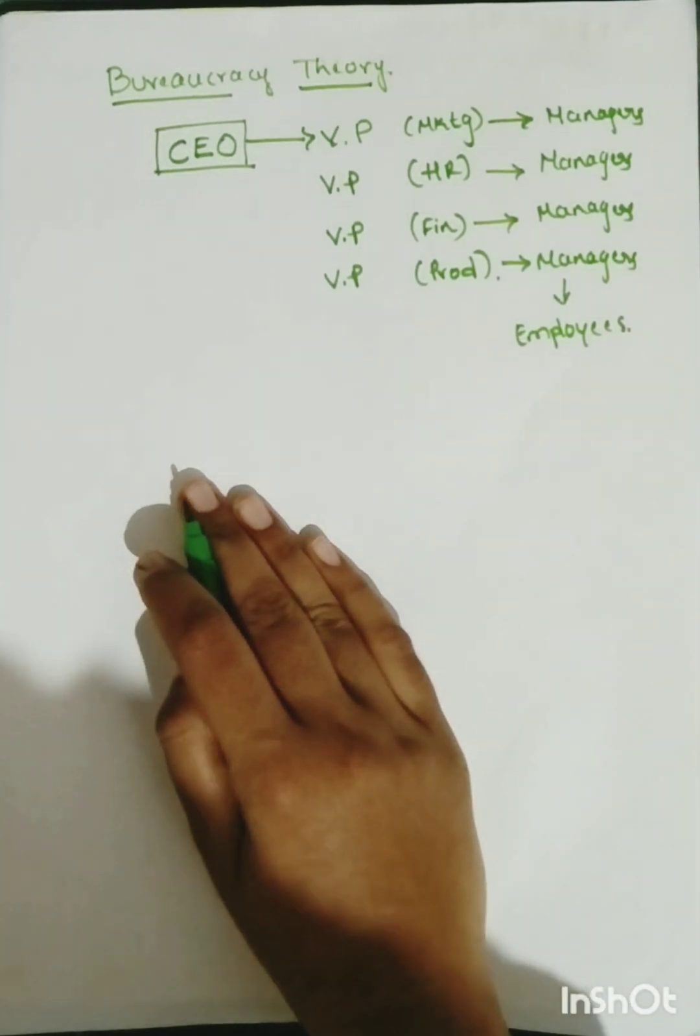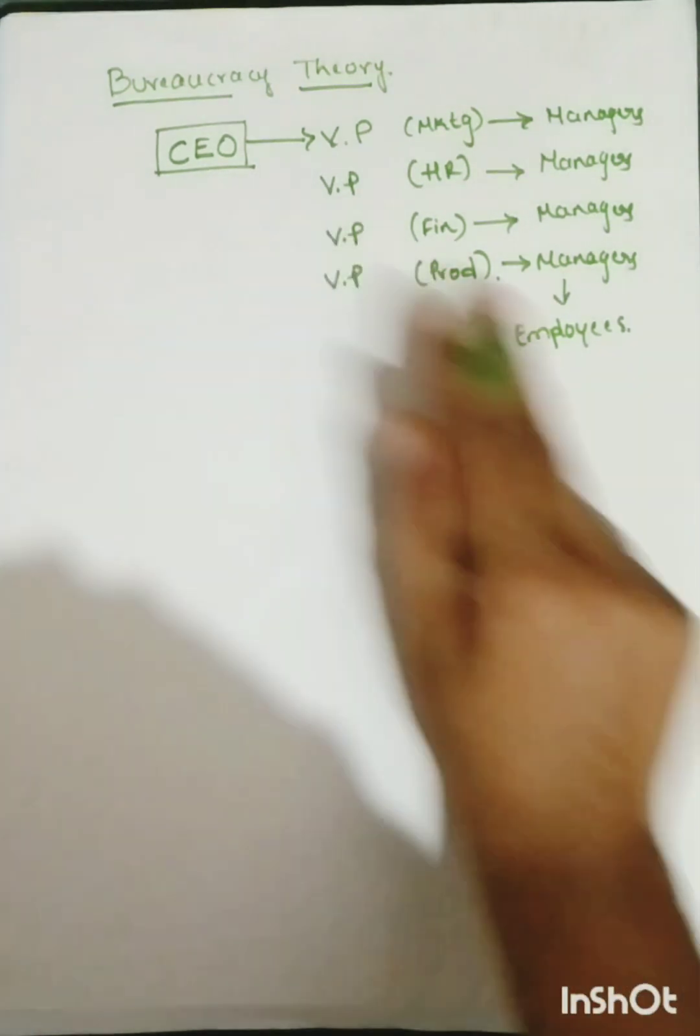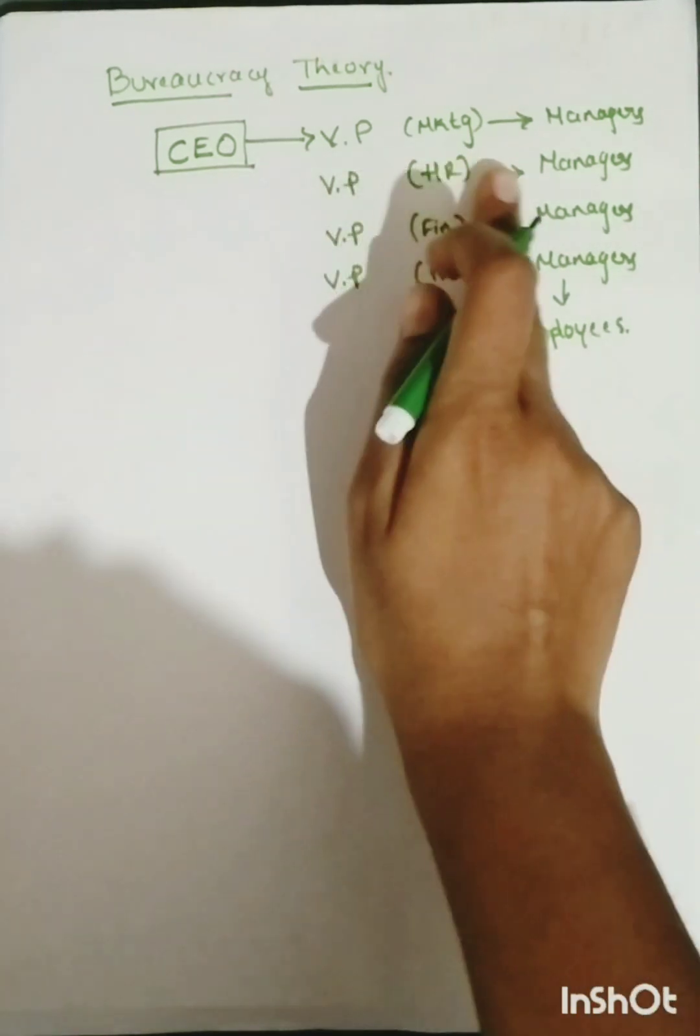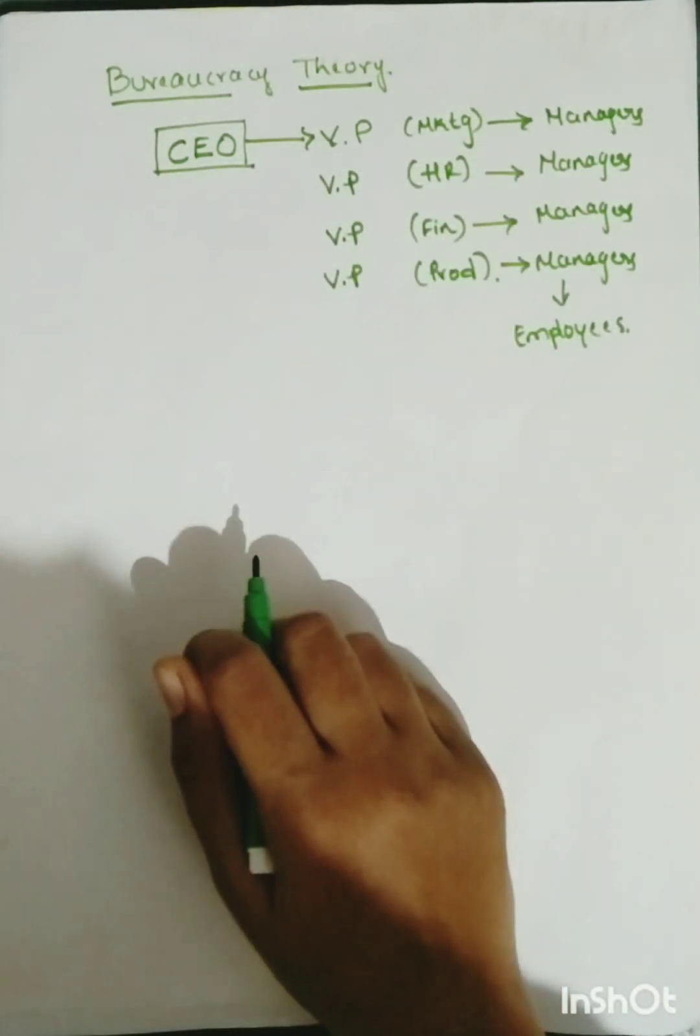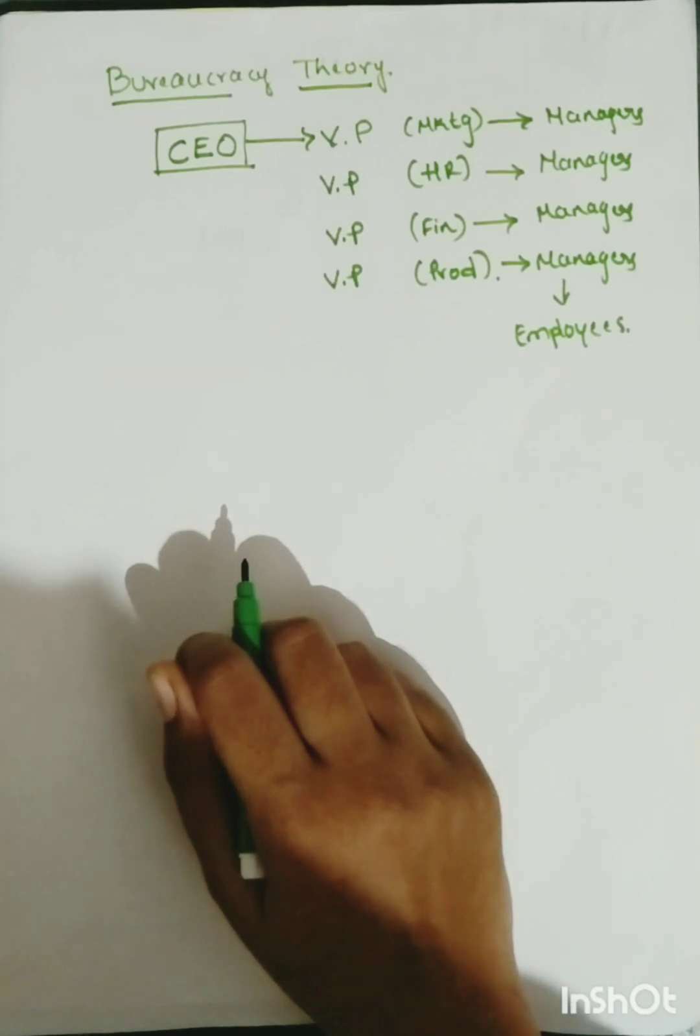This is an organizational design where we can see the hierarchy from the top to bottom level management. This is the top level and this is the bottom level, and this is the hierarchical procedure.